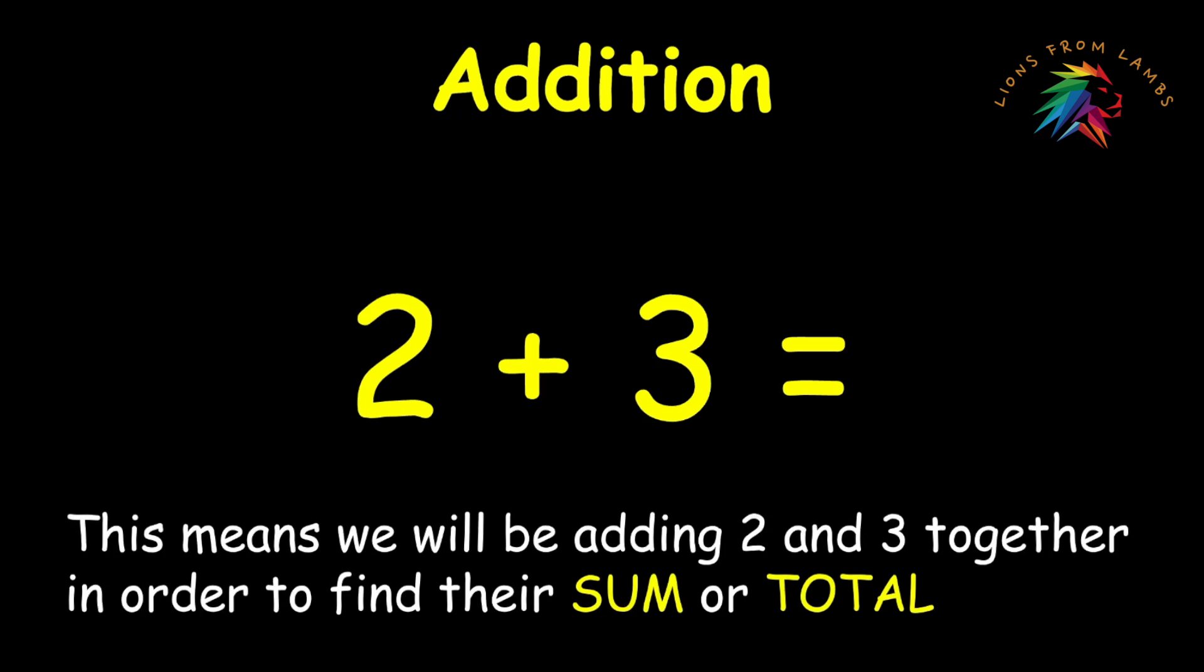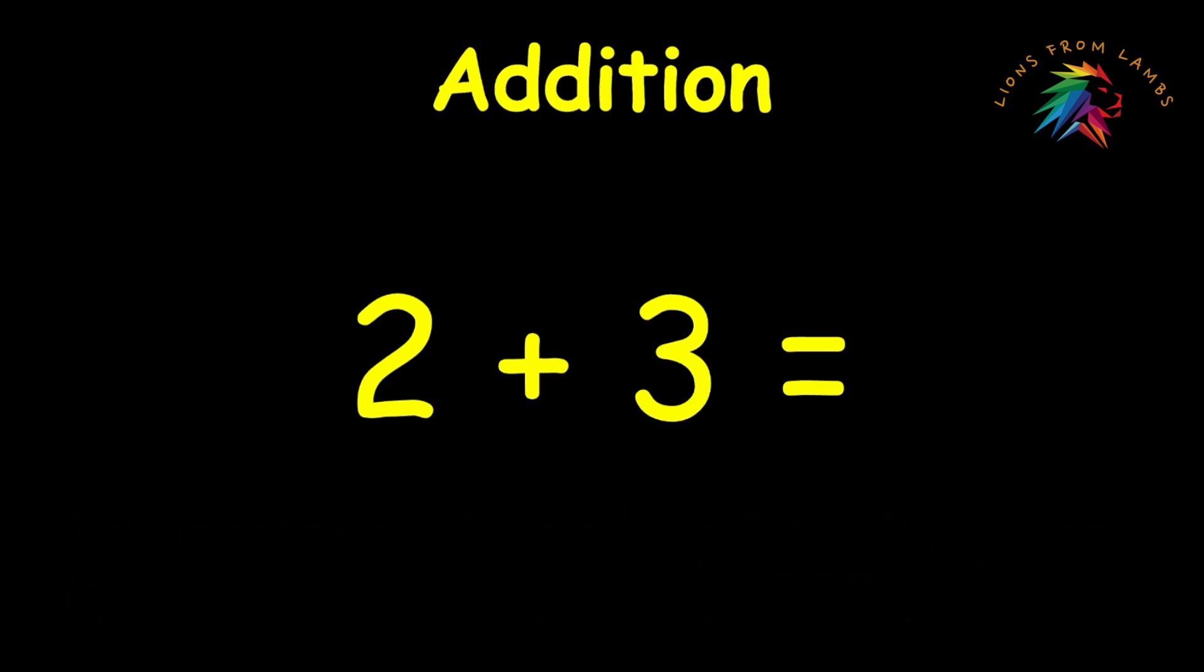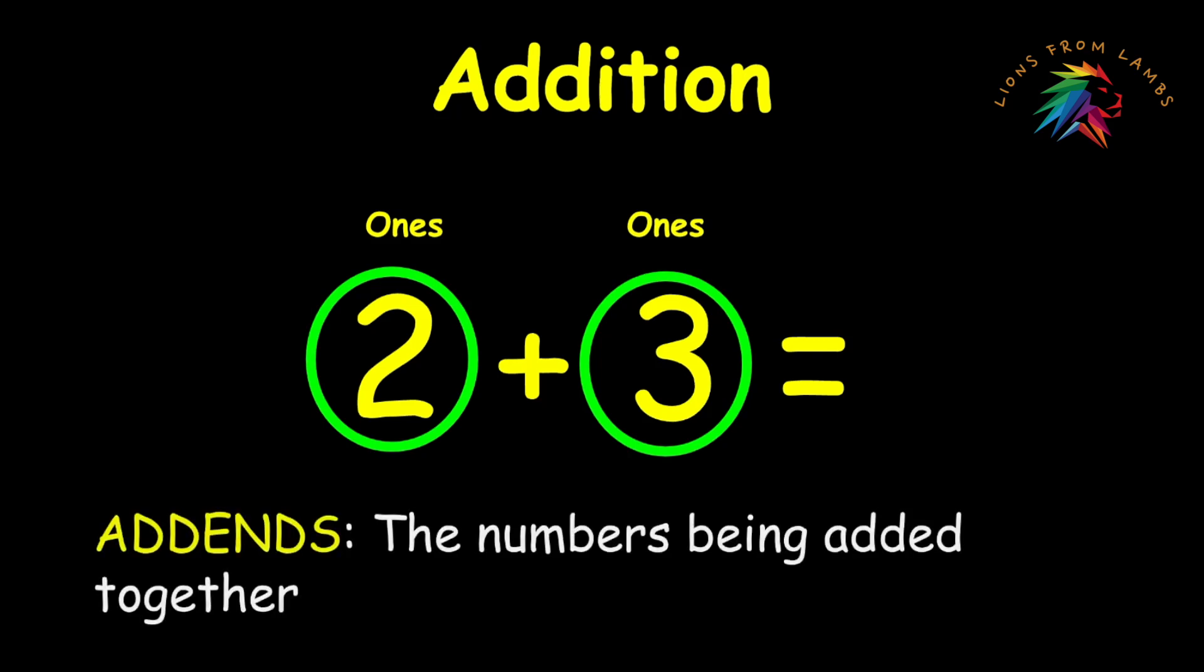Because they're both single digit numbers, they both only contain the one's place value. The addition symbol lets us know that the operation we're performing is addition. Now the numbers two and three are called our addends. Addends is what we call the numbers that are being added together.